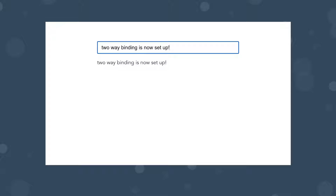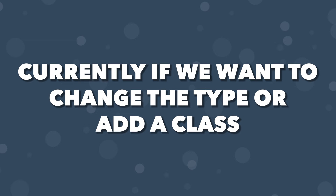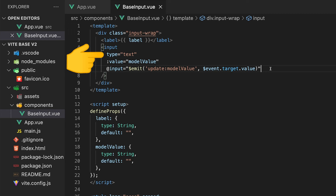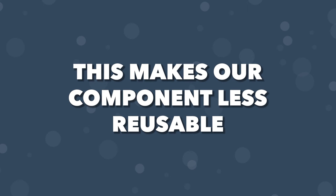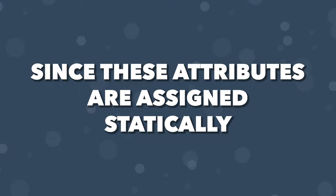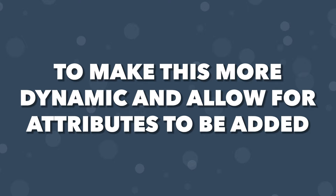Currently, if you want to change the type of our input to a number, password, or email, or even add a class, we have to change the type attribute or add a class directly within our component. This makes our component less reusable since the type and class are going to be statically assigned within that component itself. To make things more dynamic and allow for different types and classes to be added, we can use something called $attrs.